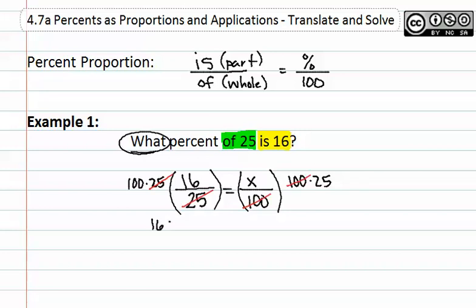This will result in 1600 equals 25x. You may now continue to solve the problem in which we divide both sides by 25. We therefore get x equals 64.